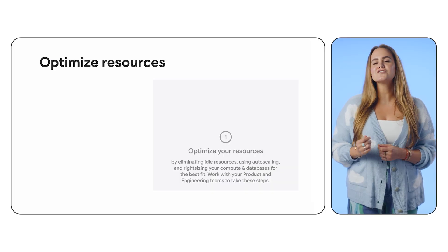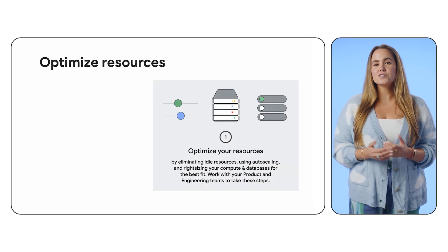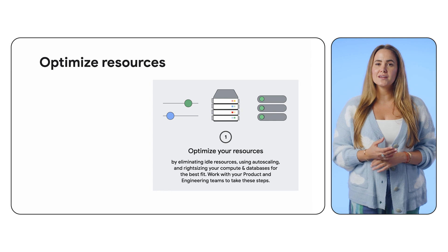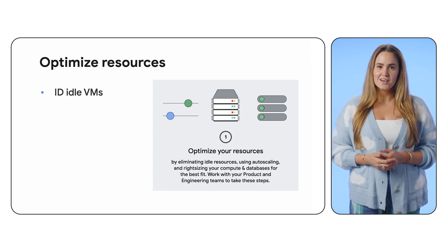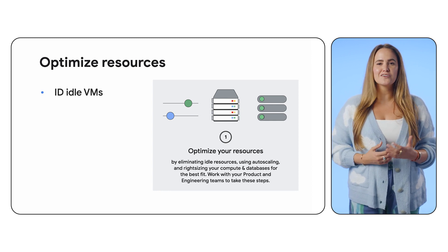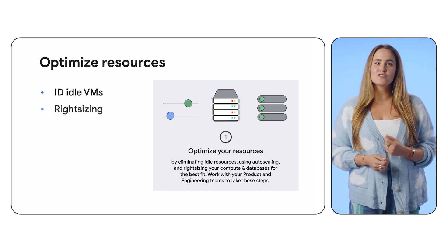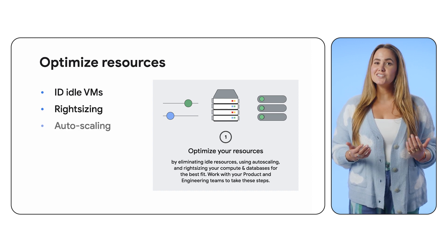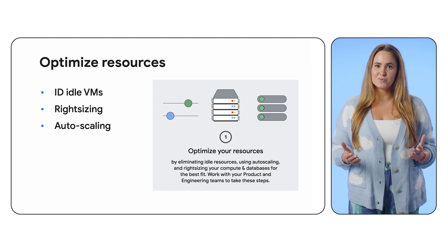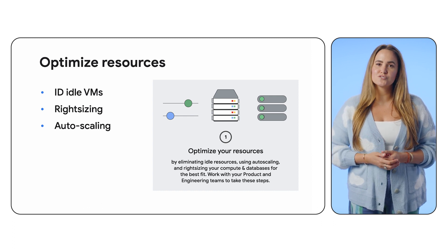Beyond that basic framework, there are three key areas for cost optimization on cloud. The first is resource optimization, which can be accomplished by evaluating where you might be spending when you don't have to. Actions like identifying idle VMs and databases, right-sizing over-provisioned resources, and using auto-scaling wherever possible can be powerful steps towards reducing your cloud spend. These actions can be a joint effort between product and engineering teams.